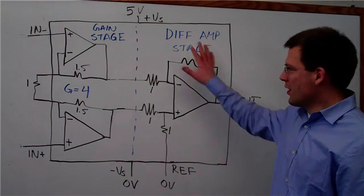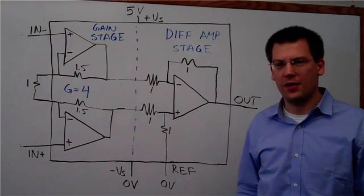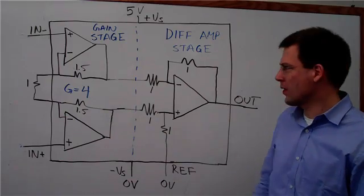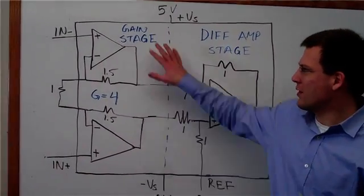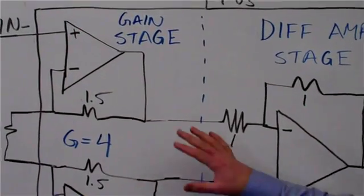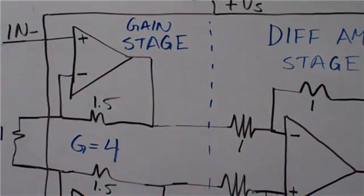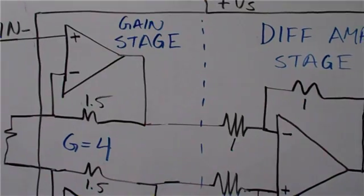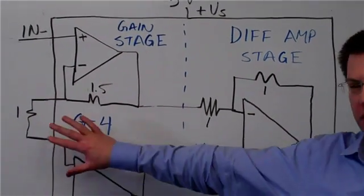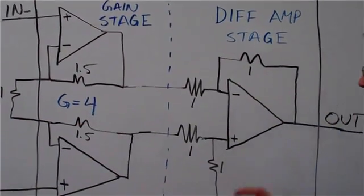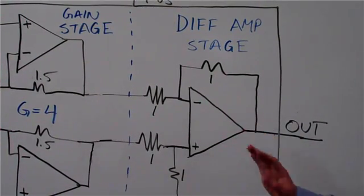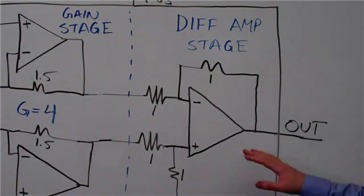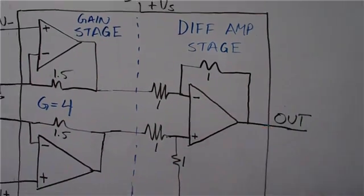So what I've drawn here on the board is a typical three op amp instrumentation amplifier circuit. You can see here it's composed of two different stages. The first is the gain stage and the whole purpose of the gain stage is to amplify the signal. It does not remove any common mode of the input signal. The second stage is the difference amplifier stage and its purpose typically is not to apply any gain but just to remove the common mode signal.